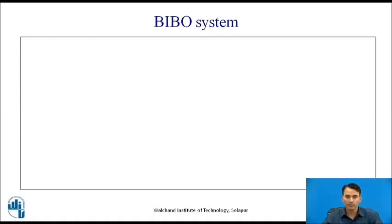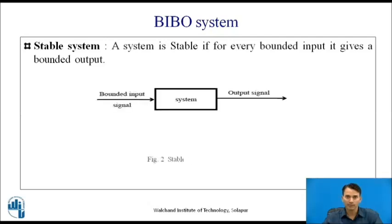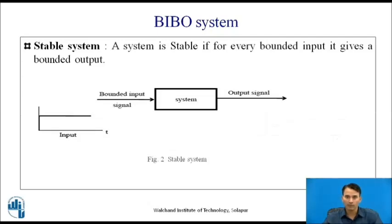Now let us see the BIBO system — what do we mean by a BIBO system. A system is stable if for every bounded input it gives a bounded output; such a system is known as a BIBO stable system. Looking at the block diagram: if the input is a bounded input signal and the output is also bounded, it is a BIBO stable system. For example, for a first order system the output is bounded, and for a second order system the output is a decaying sinusoidal signal — both are BIBO stable.